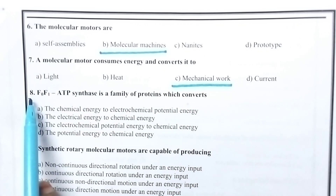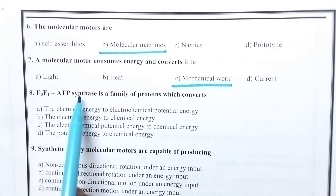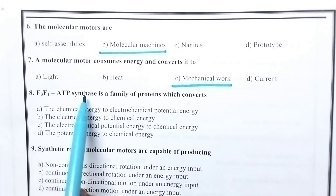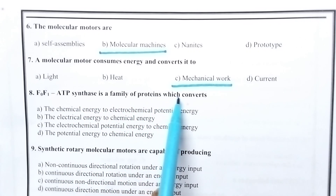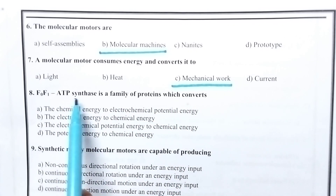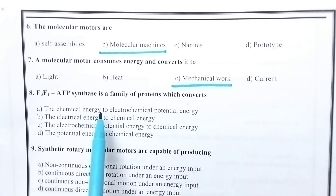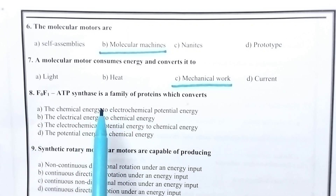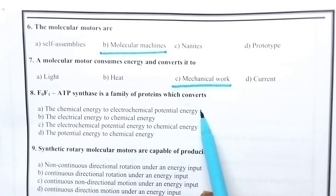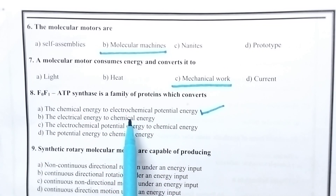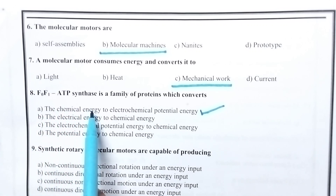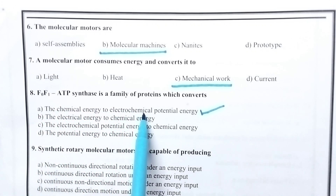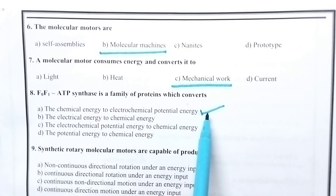Coming to the 8th question: F0, F1, ATP synthesis. ATP synthesis means it is an enzyme, a family of proteins which converts energy. ATP synthesis is responsible for the production of potential energy by consuming chemical energy. So option A, that is chemical energy to electrochemical potential energy, is the right option.